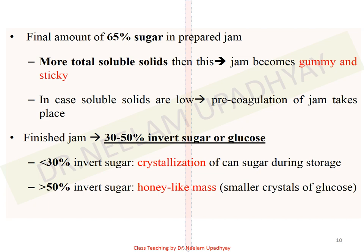Jam should contain around 30 to 50 percent invert sugar or glucose. If you have less than 30 percent invert sugar, it results in crystallization of cane sugar during storage. If you have more than 50 percent invert sugar, it results in a honey-like mass in jam due to the formation of smaller crystals of glucose. So invert sugar should be between 30 to 50 percent.